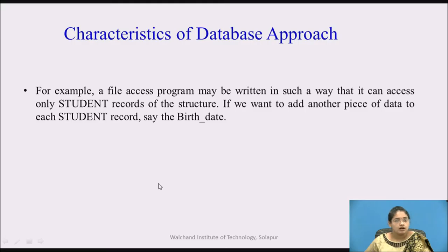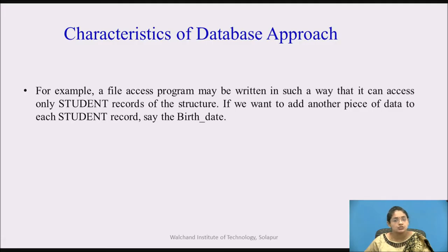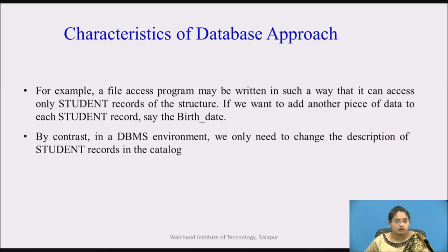For example, a file access program may be written to access only a student record of a certain structure. If we want to add another piece of data to each student record, like date of birth, in a C program you need to change the program that accesses that file. But this is not the case in the database approach, because the data is in the database catalog and you only make changes in the catalog. In a DBMS environment, we only need to change the description of the student record in the catalog.